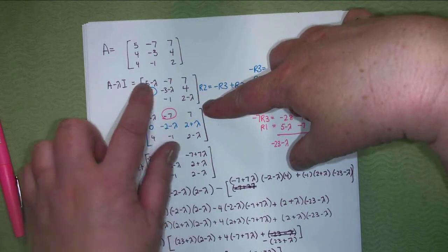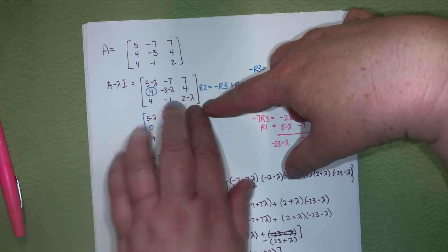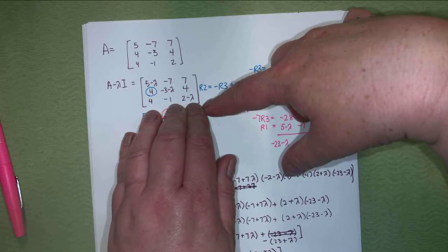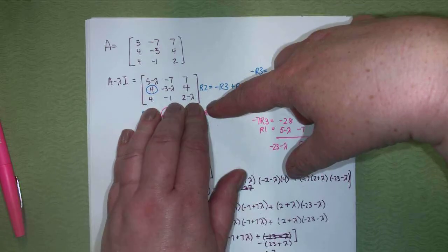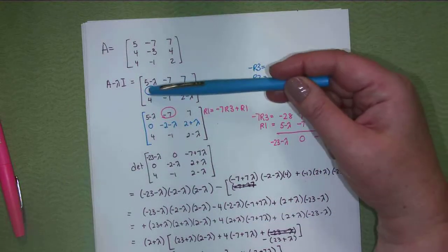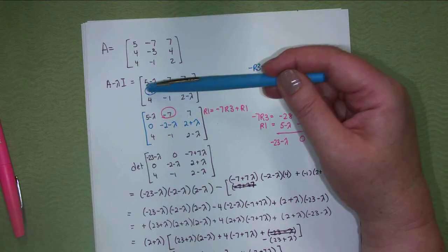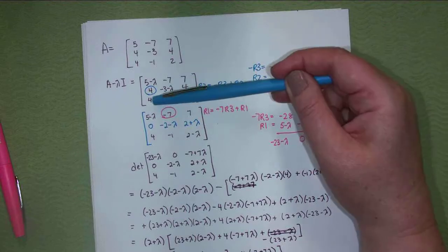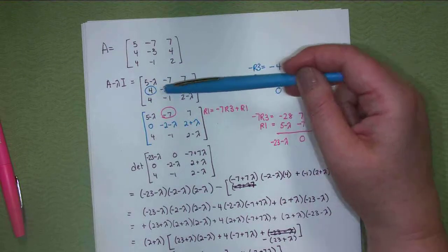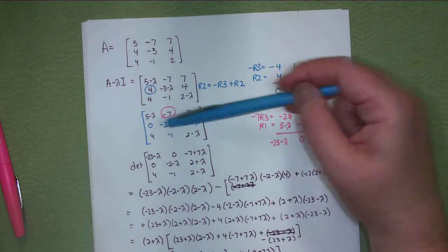You do A minus lambda I, which remember is just subtracting lambda down the main diagonal. So this is no different. And then you need to find the determinant of that. So it would be good to have a few zeros so that you're better able to do that. I looked at this, and I said, there's two fours here. And you could do it slightly different than me. I chose to replace row two with minus row three, so that that would be a minus four, plus row two. So I replaced row two. So here I did it, this step. Everything else is the same because I've just replaced row two.